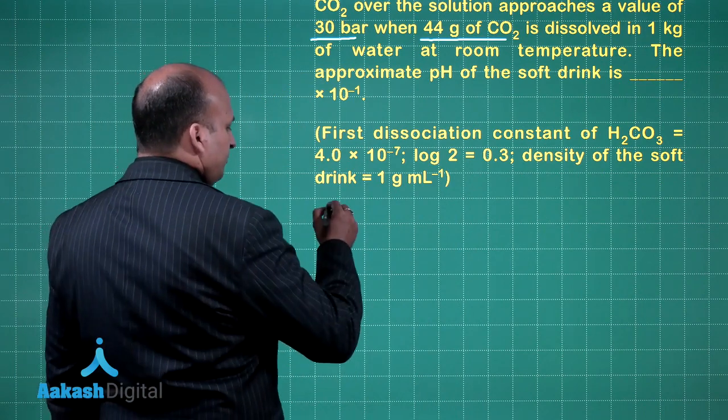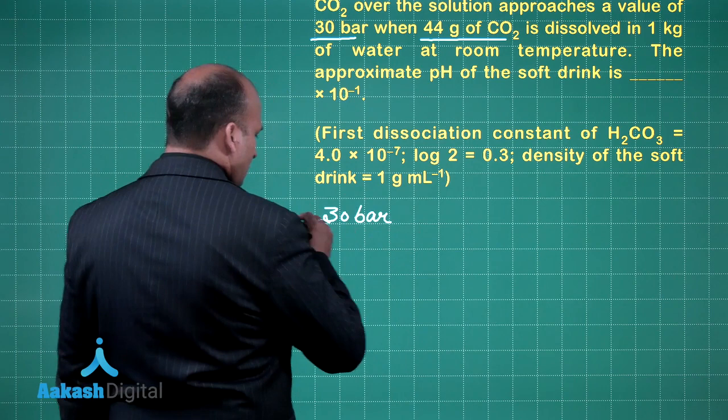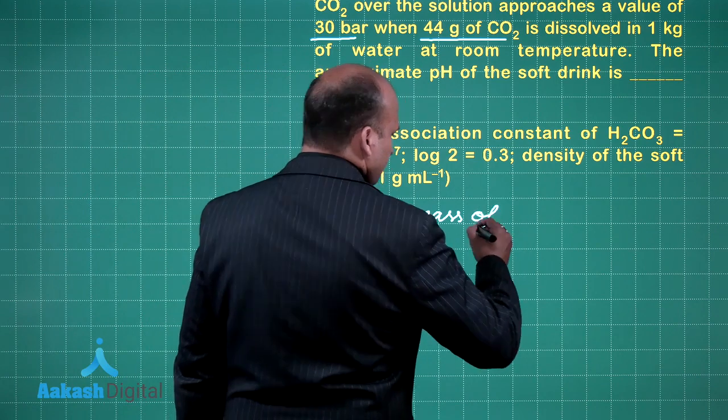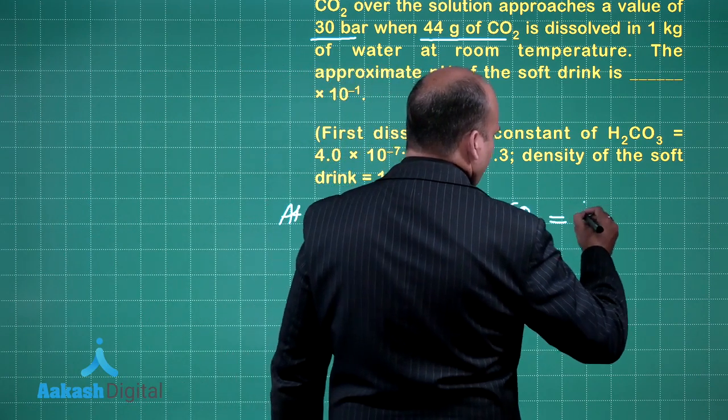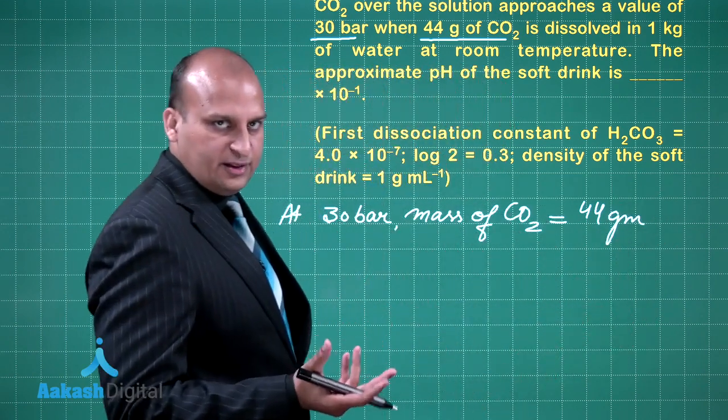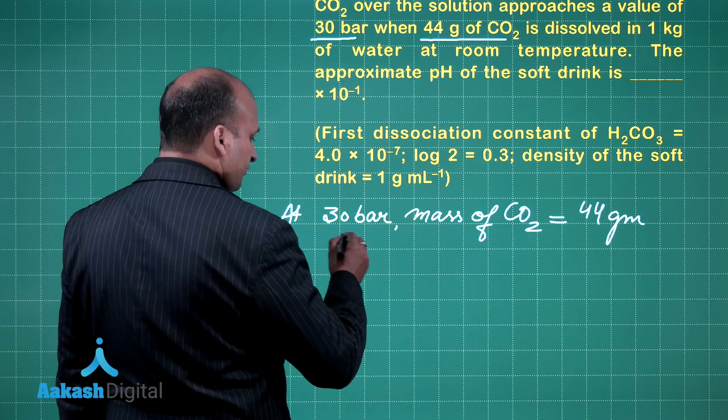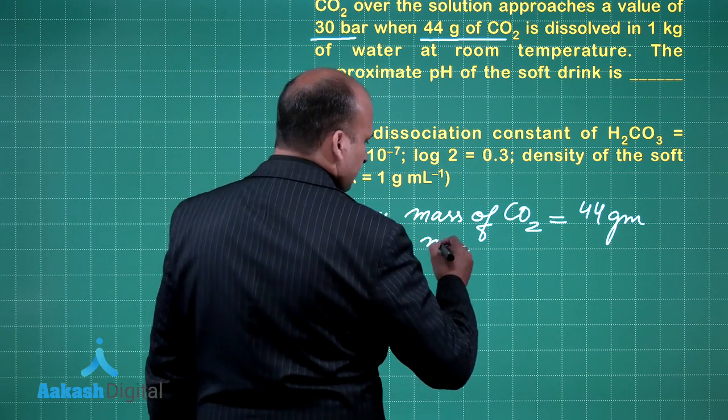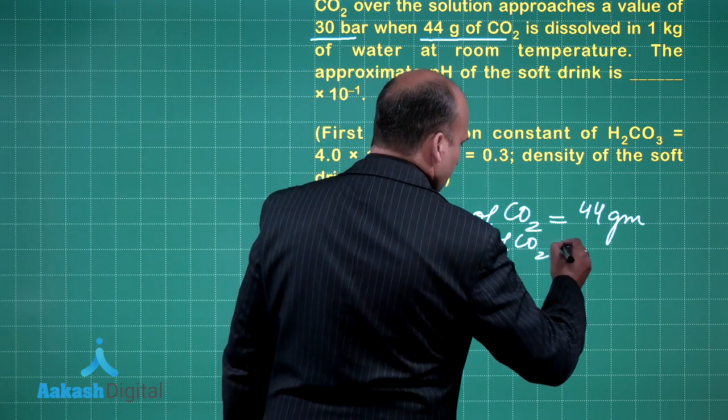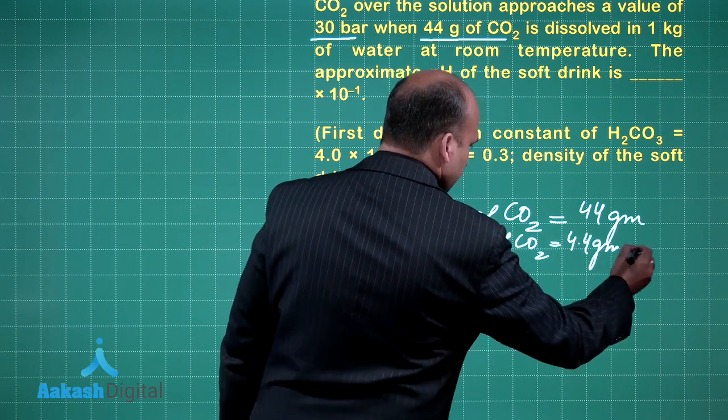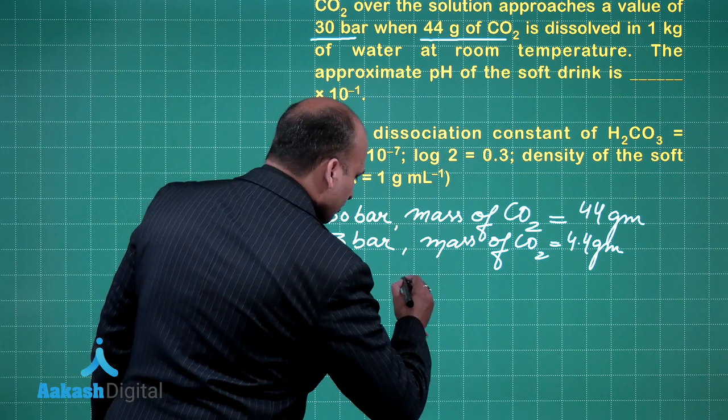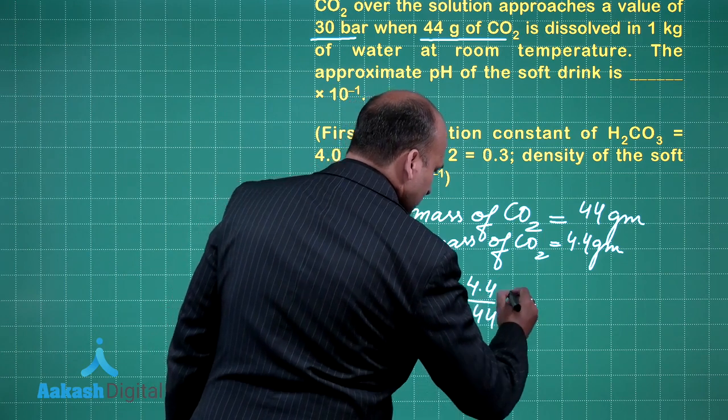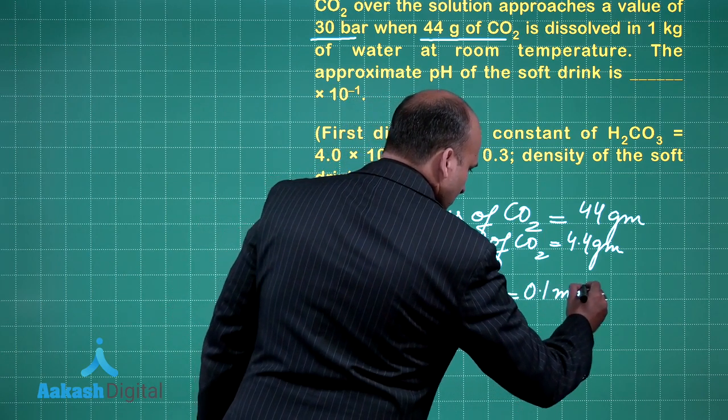How to use this data? We are given that if the pressure is 30 bar, mass of carbon dioxide in the solution will be 44 grams, but the soft drink that we are having has a pressure of 3 bar. So at 3 bar the mass of CO2 will be equal to 4.4 grams. So I can say that the number of moles of CO2 will be equal to 4.4 divided by 44 which is 0.1 mole.